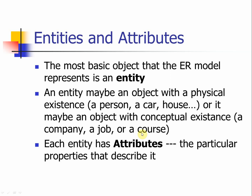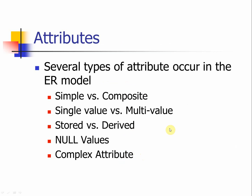An entity may also be an object with conceptual existence, such as a company, a job, or a course — something you cannot really see but you can use or be part of. That is like a human creation that creates a conceptual existence of an item. For example, a course has attributes like how many students, which room, what time, and waiting list. Every entity has attributes — particular properties describing the entity you are interested in.